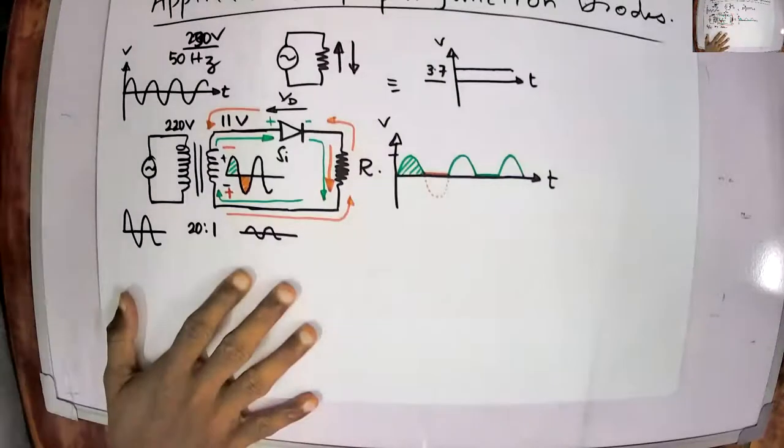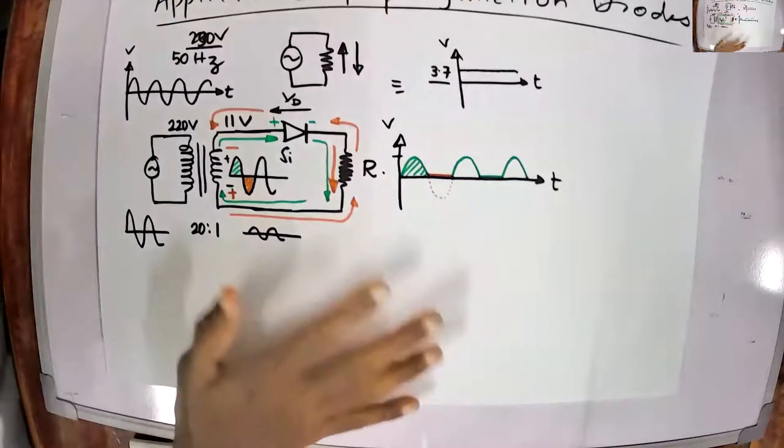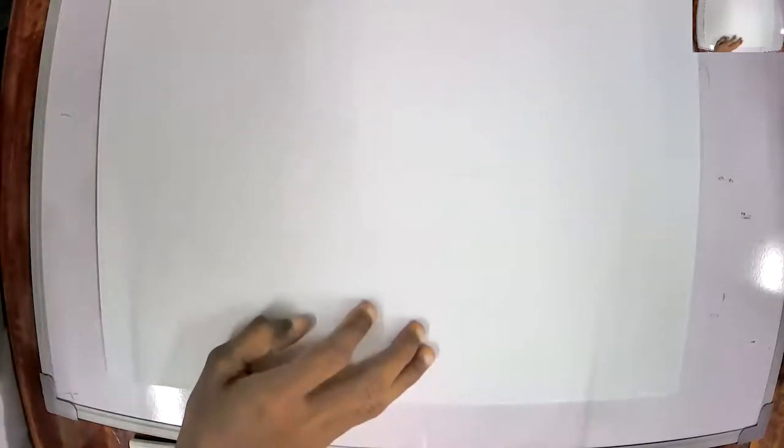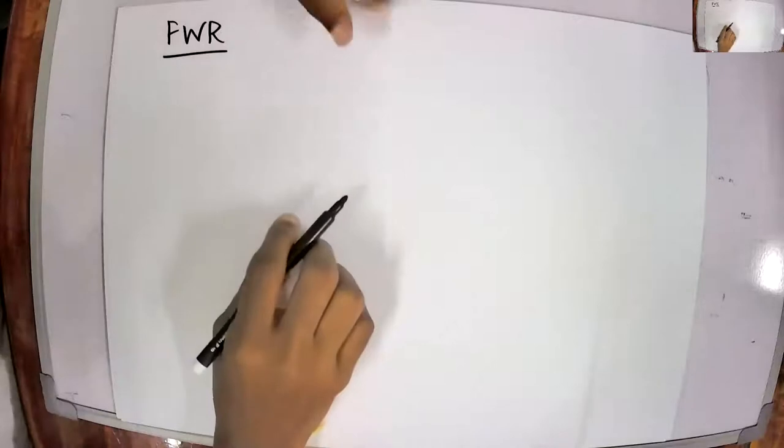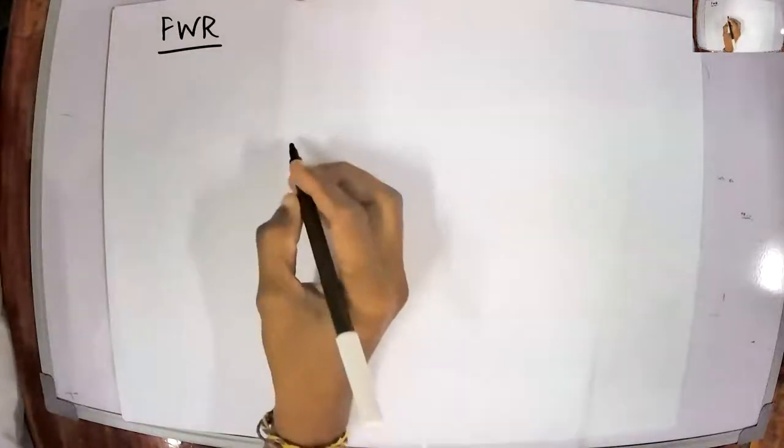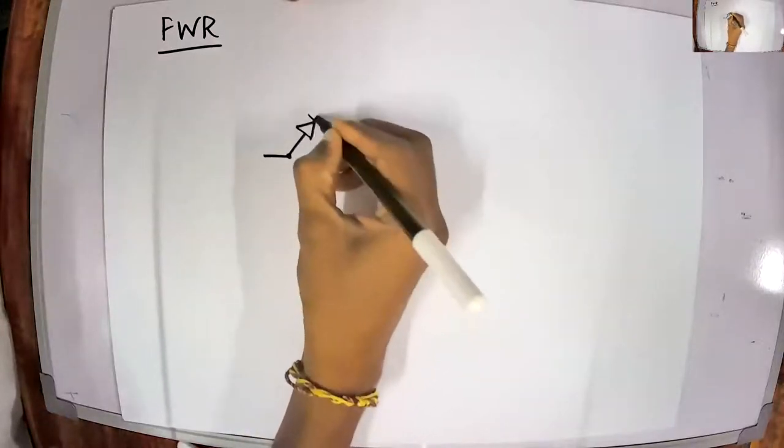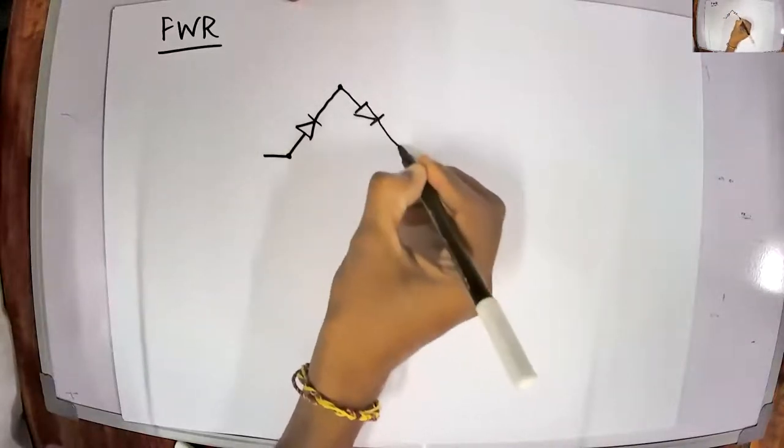To avoid losing half the waveform, we can use a full-wave rectifier. There are two types: the bridge rectifier and the center-tap transformer rectifier. Let's look at the bridge rectifier first. The bridge rectifier consists of four diodes connected in a specific configuration.